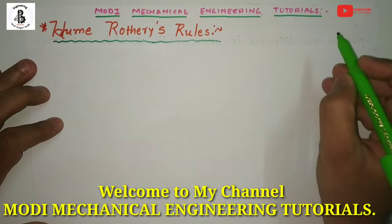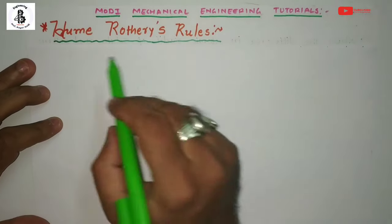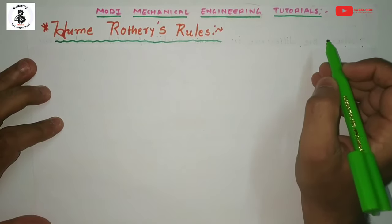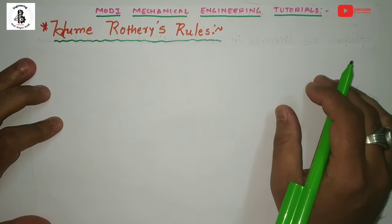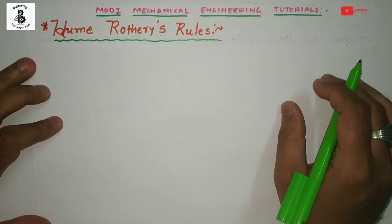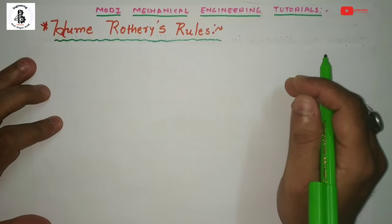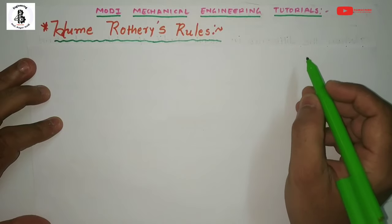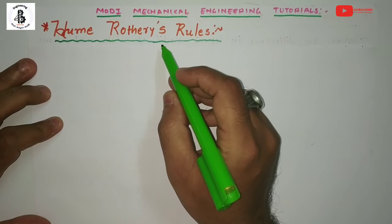Welcome to Modi Mechanical Engineering Tutorials. In this video I will be explaining in detail the Hume-Rothery rules. Basically, Hume-Rothery rules work on the solubility of metallic ions, particularly for binary systems — how both metals will be mixed with each other, or dissolved in each other, to form new solid solution materials. These governing factors are evaluated by and known as the Hume-Rothery rules.